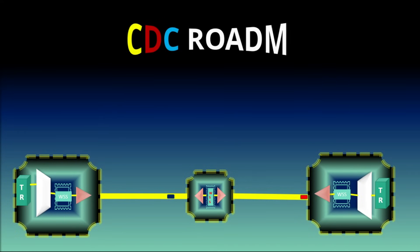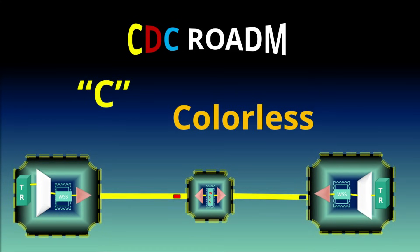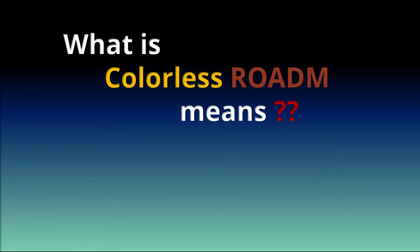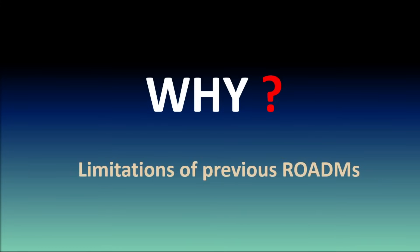In CDC ROADM Network, this video explains about the first C, which is colorless, and discusses the operational benefits it provides. What does colorless ROADM mean? In interviews, this question is sometimes asked, and the correct answer is that wavelength can be recolored anytime. But adding more details about its operational benefits would be impressive. Before discussing colorless, let's first discuss why we need it and the limitations of previous ROADMs, which will help relate the colorless benefits.